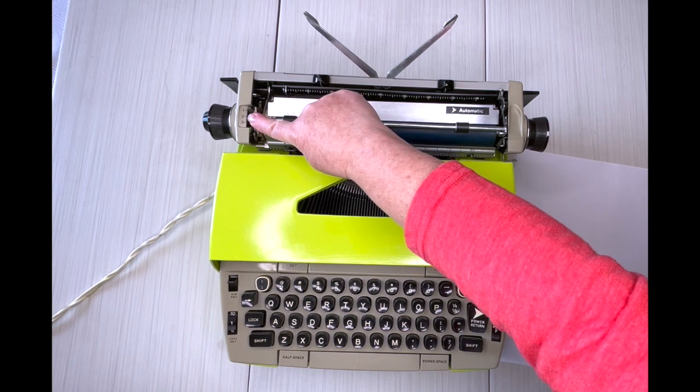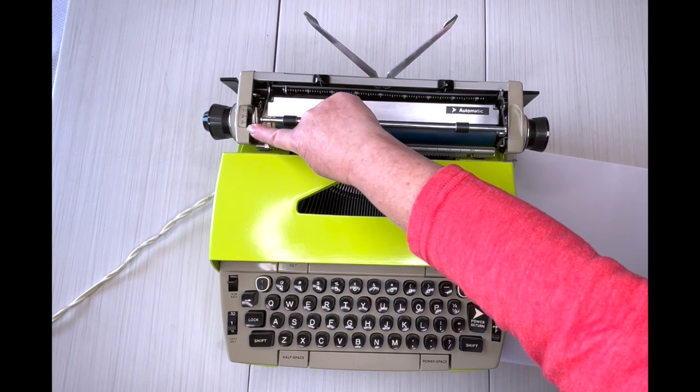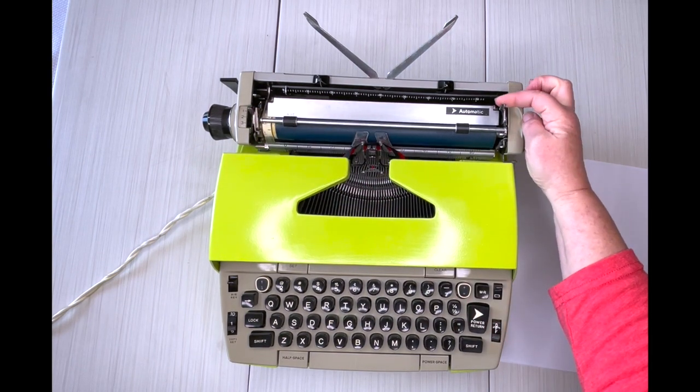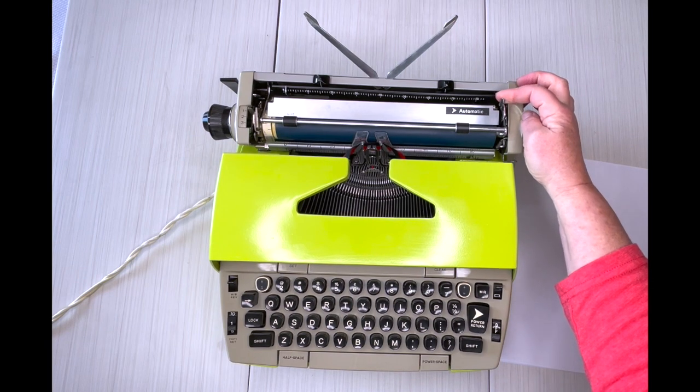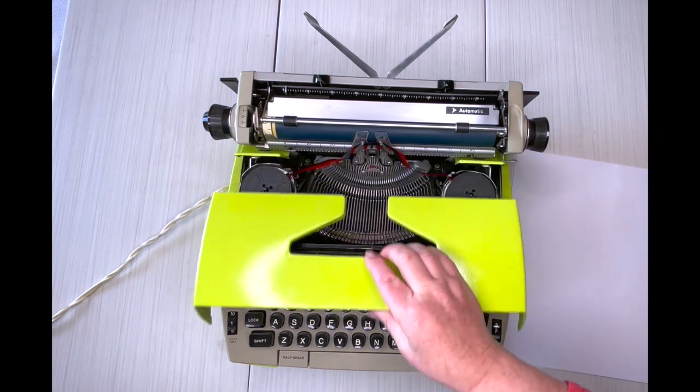A line selector. When you hit return, let's go advance one, two, or three lines. Paper release to adjust your paper if it's crooked. And then to open, slide it forward.